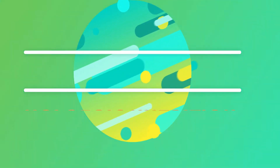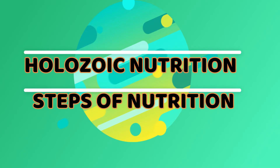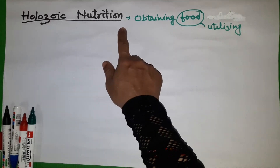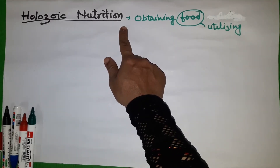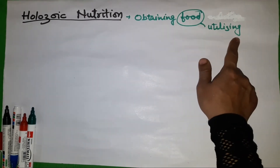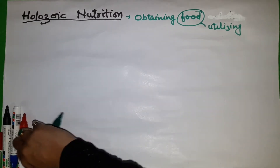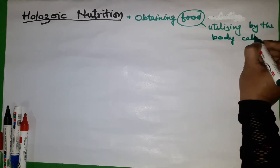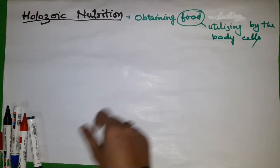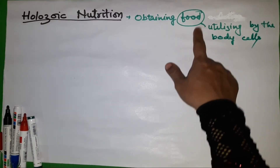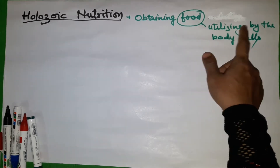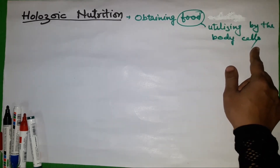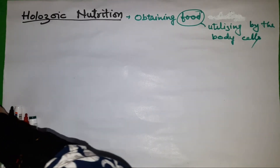In this video, I am going to explain holozoic nutrition and the steps of nutrition. Nutrition is the process in which living organisms obtain or synthesize food and convert it so that it can be utilized by the body cells.